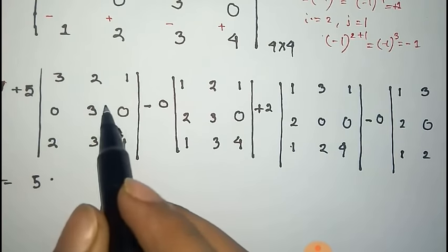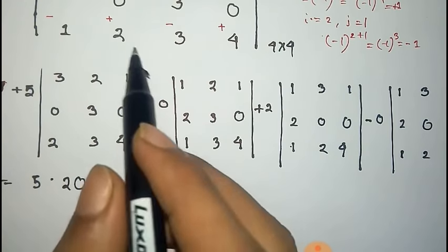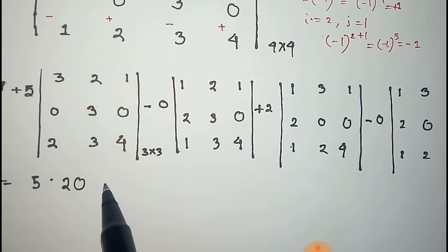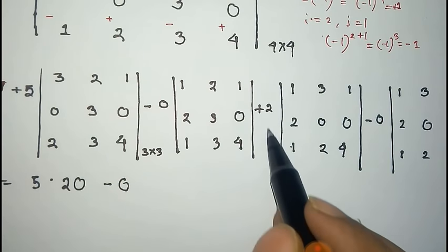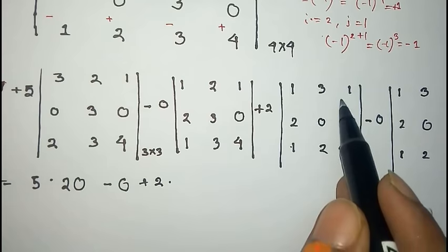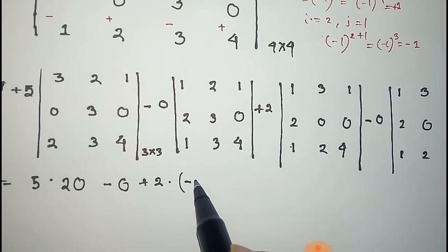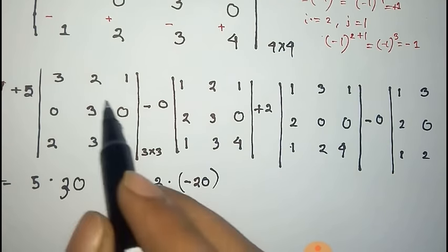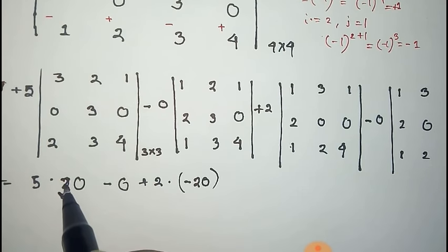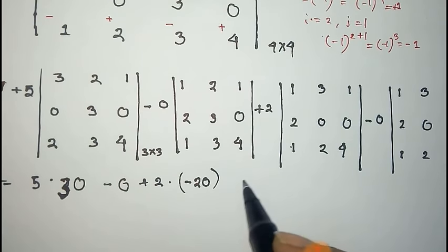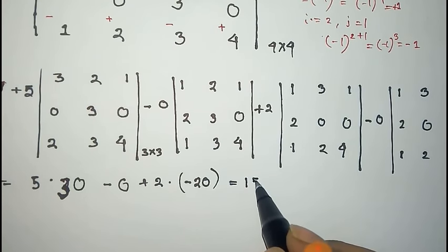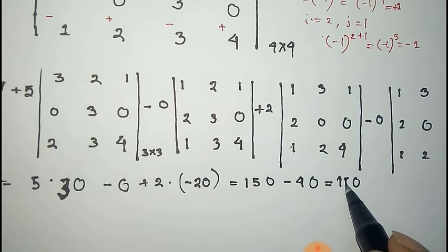This equals 5 times the value of the first 3x3 determinant, which is 30. For the second term, plus 2 into the value of its determinant, which is minus 20. The zero terms cancel out. So the total is 5 times 30 plus 2 times minus 20, giving 150 minus 40, which equals 110.